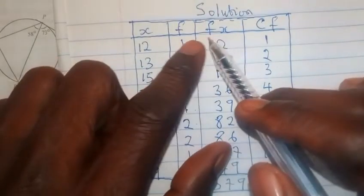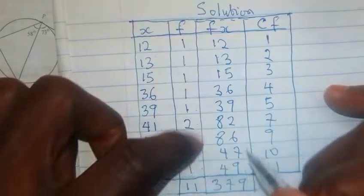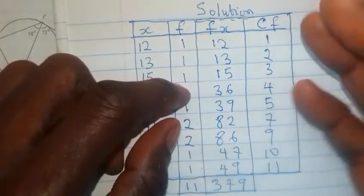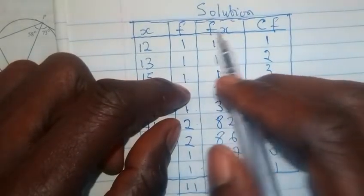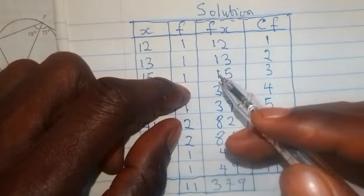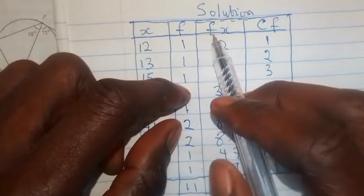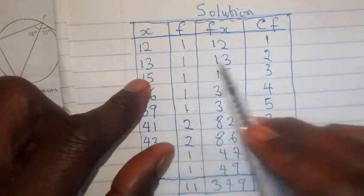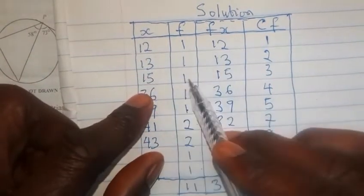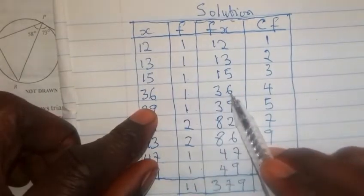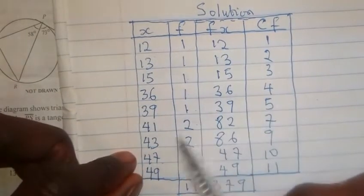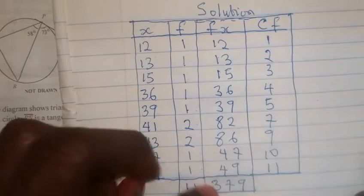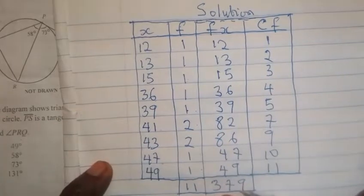Now, the next thing we are going to have here is to get a particular value for F of X. What does this mean? Because if we are going to calculate for the mean, we will need the value for F of X. I'm going to show you that shortly. Just follow me with what I'm doing here, okay? So, F of X means we multiply F and X together. So, 1 times 12 will give us this. 1 times 13 will give us this. 15 times 1 will give us 15. 36 times 1 will give us 36. And if you multiply each of these values, the corresponding answers is what you see here. Now, we are going to add up everything you see here. And in doing so, we have 379.